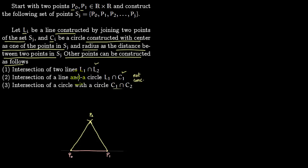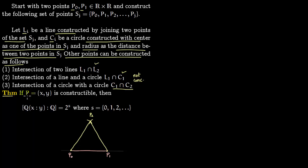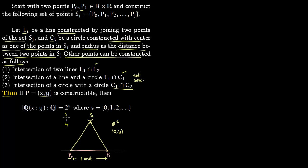The ancient Greeks could not construct certain points this way, and those became the impossibility theorems, which are easy to prove using field theory. The key theorem is: if a point is constructible, then the degree [Q(x,y):Q] over the rationals is 2^s, where s is 0, 1, 2, and so on. You start with rational points — P0 as the origin, P1 at distance 1 — and all constructible extensions have degree 1, 2, 4, 8, etc.